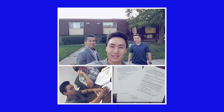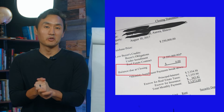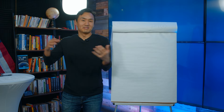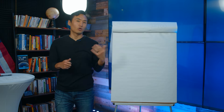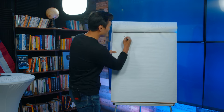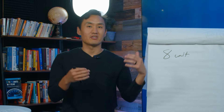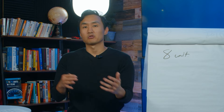Here are some photos of that eight-unit apartment building I bought years back. On a side note, I actually ended up buying this building with absolutely no money down — but that's a video for another day. Scheduled gross income is the rent you've scheduled to collect based on your current leases. For this eight-unit building, we secured leases on all units for $950 per unit after stabilization.